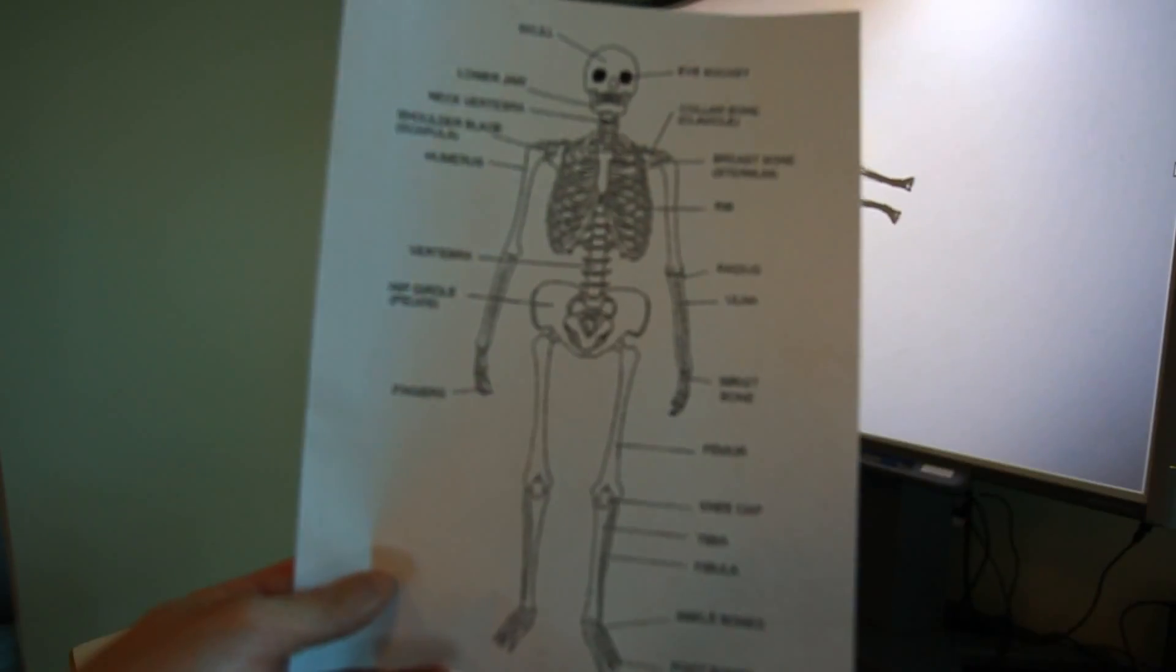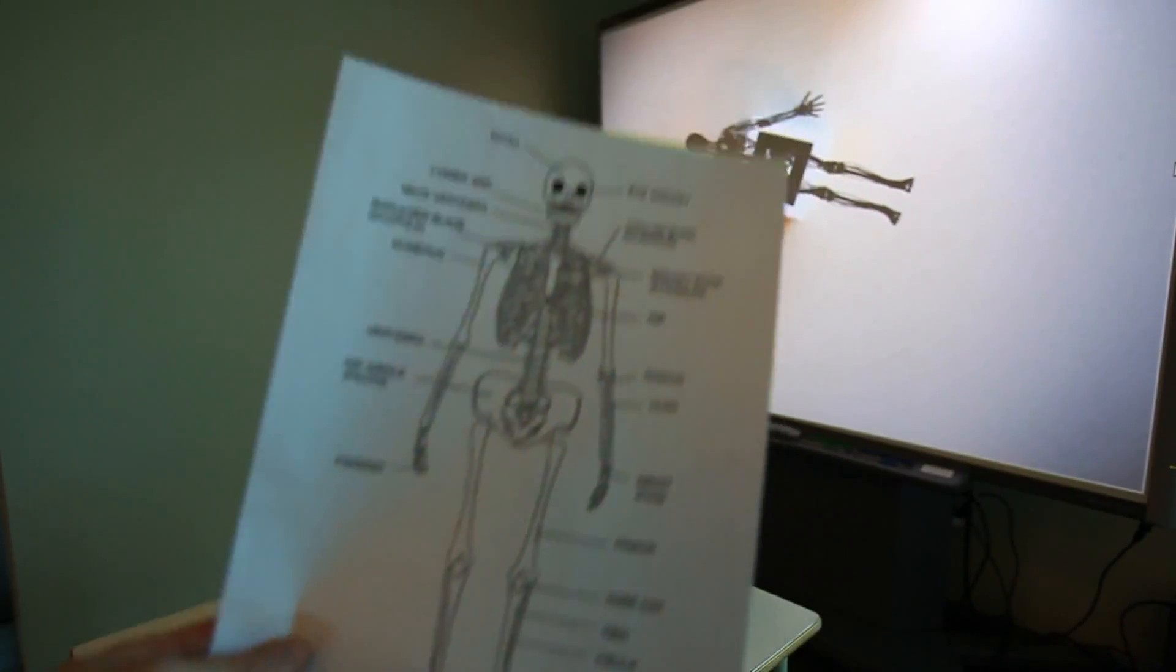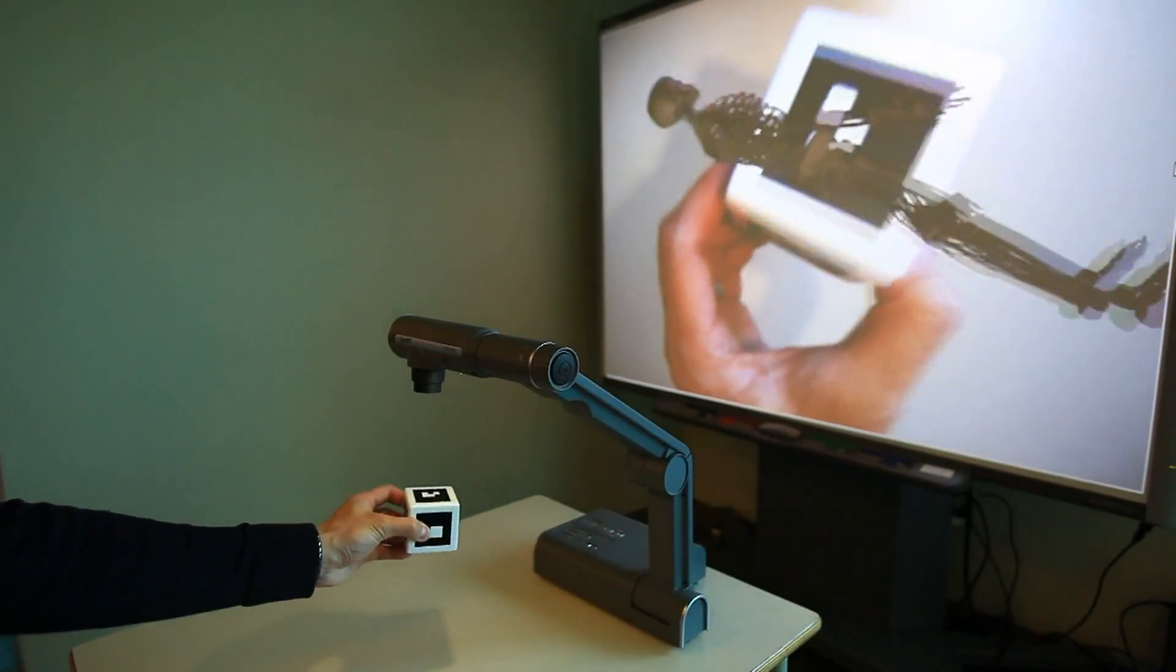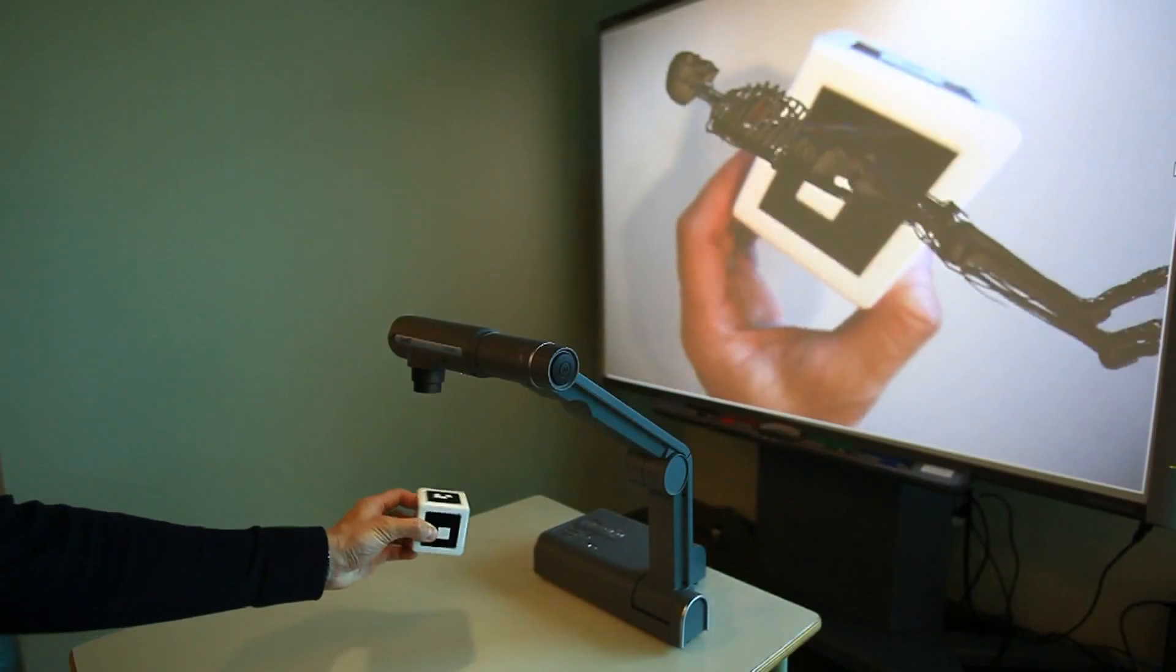For example, rather than simply showing students a 2D image of the human skeleton, educators can now place a marker underneath the document camera to display a 3D image that can be rotated and explored.